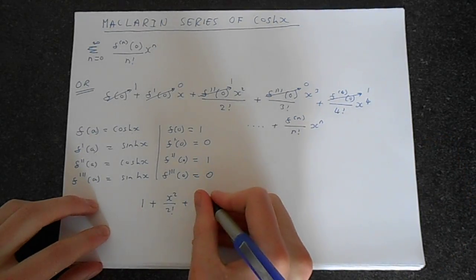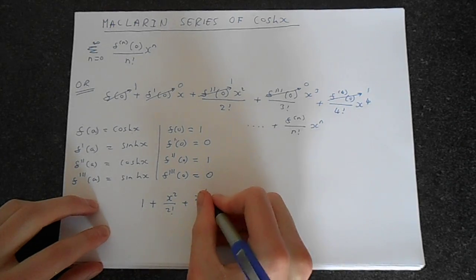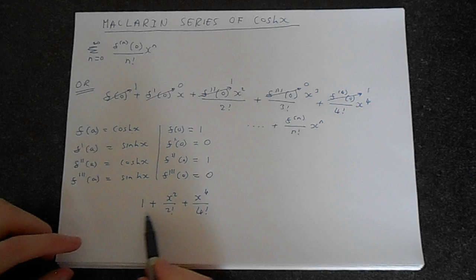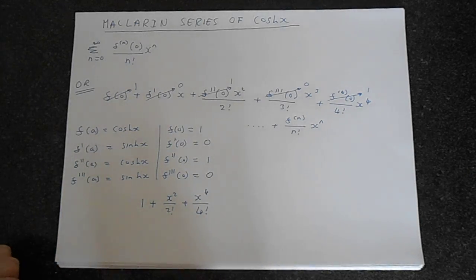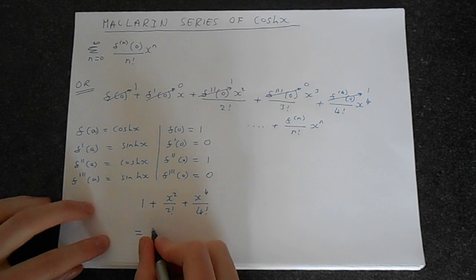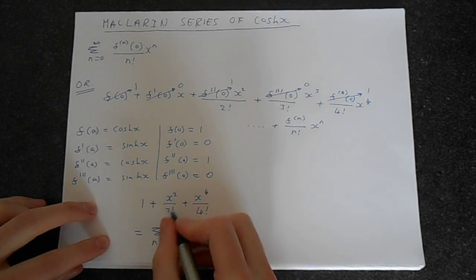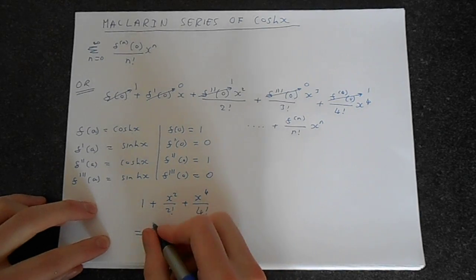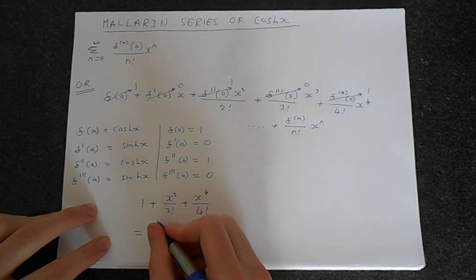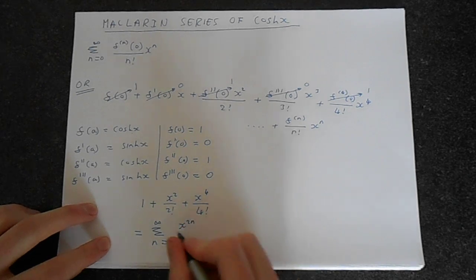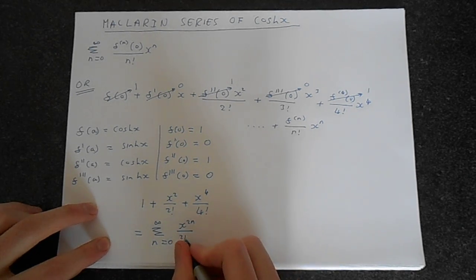So is there any way that we can write this as a series? I guess we could say that this is equal to the sum n equals 0, this is a different n, this is n just for this thing, n equals 0 up to infinity, an infinite series of x to the 2n over 2n factorial.